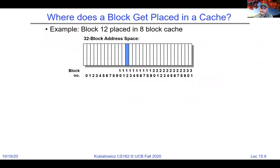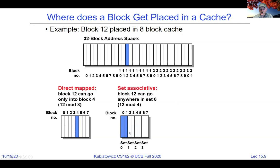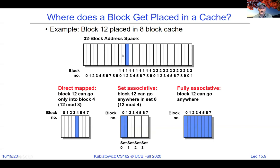Where does a block get placed in the cache? With a 32-block address space: in a direct-mapped cache with 8 entries, block 12 can only go in one place — 12 mod 8. In a two-way set-associative with 4 sets, block 12 can go in two places. In a fully associative cache, block 12 can go in any of the 8 places. Associativity describes the flexibility in placing items from the memory space into the cache.